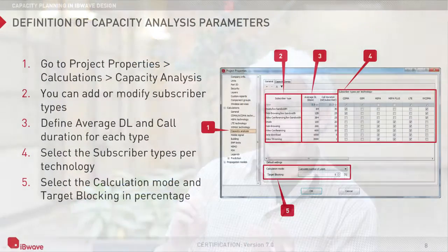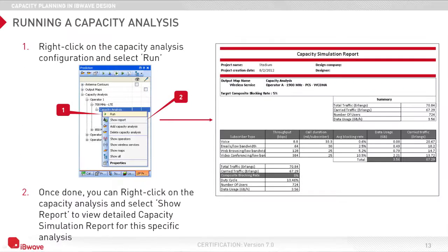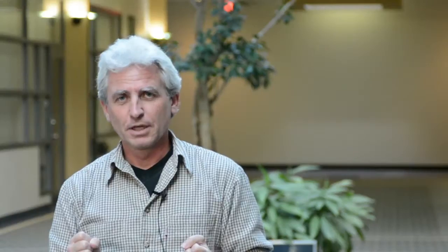Once we have that, we will see how in IBWave Design we can model that and then close the loop to see whether our design really fulfills the capacity demand. It's really from beginning to end so that in the end we can sign off and say we've got it. So that's capacity.